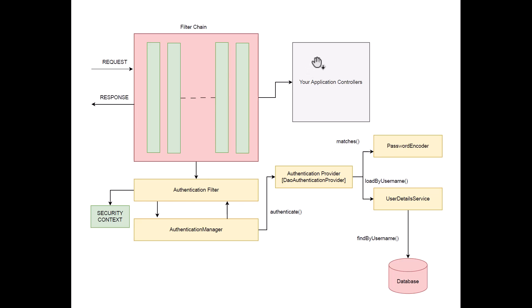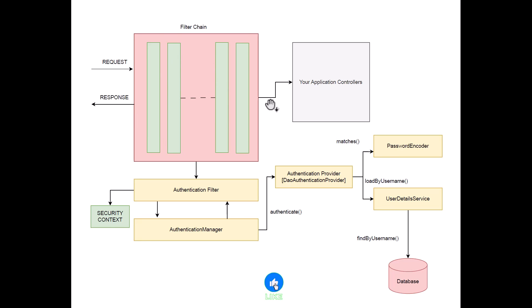One crucial thing to remember is the concept of filters: Authentication Filter, Authentication Manager, Authentication Provider, Password Encoder, and UserDetailsService — you are going to see all of these in code. It's important to understand these components and their roles. If you still have any confusion, don't worry — everything will be clear once we start coding. That's the overview of how Spring Security works; I hope this was useful.